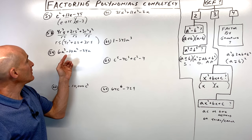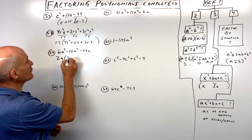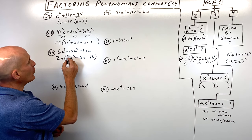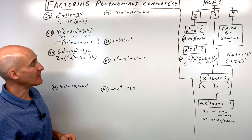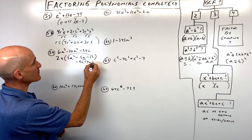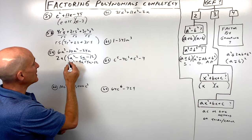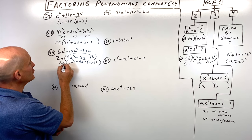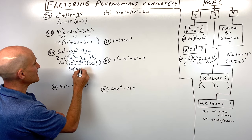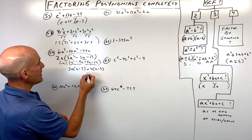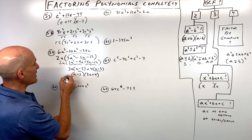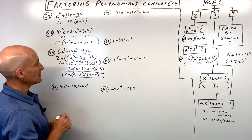Number fifty-nine has a greatest common factor of 2a. Factoring that out gives 2a times 3a squared minus 5a minus 12. Using AC: what multiplies to negative 36 and adds to negative 5? That's negative 9 and positive 4. Split the middle term, bring down the first and last terms. Factor by grouping: factor out 3a to get a minus 3, factor out 4 to also get a minus 3. Factor out a minus 3 to get 3a plus 4. Final result: 2a times a minus 3 times 3a plus 4.